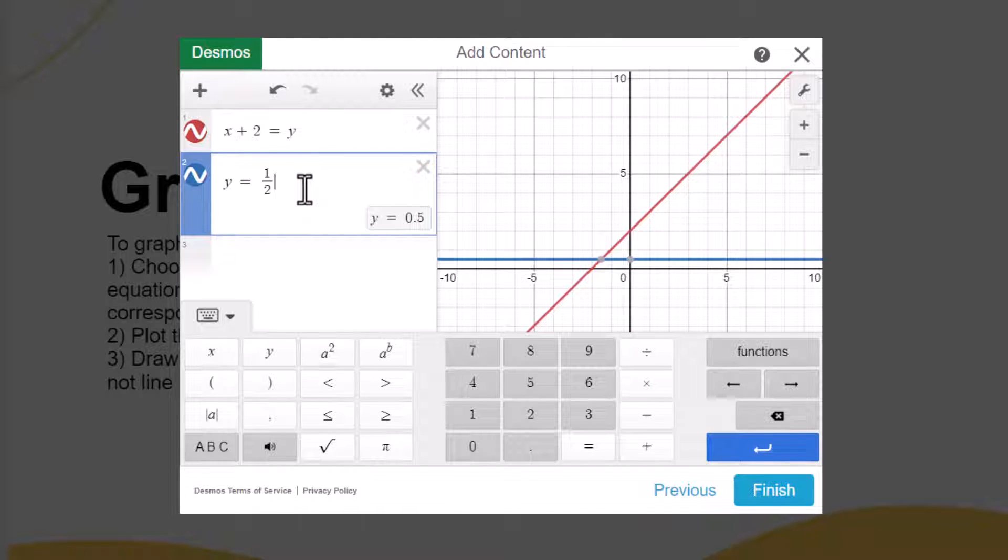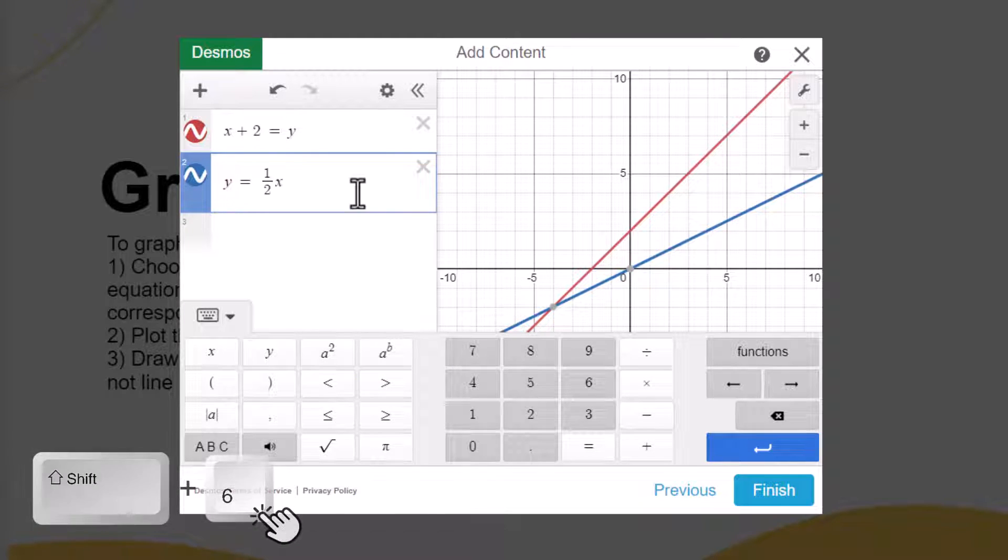You can enter exponents in one of several ways. To square a value, select the a squared button. To raise something to a higher power, enter your base, select a to the b, and then enter your exponent. To enter exponents from a physical keyboard, hold shift and select 6.